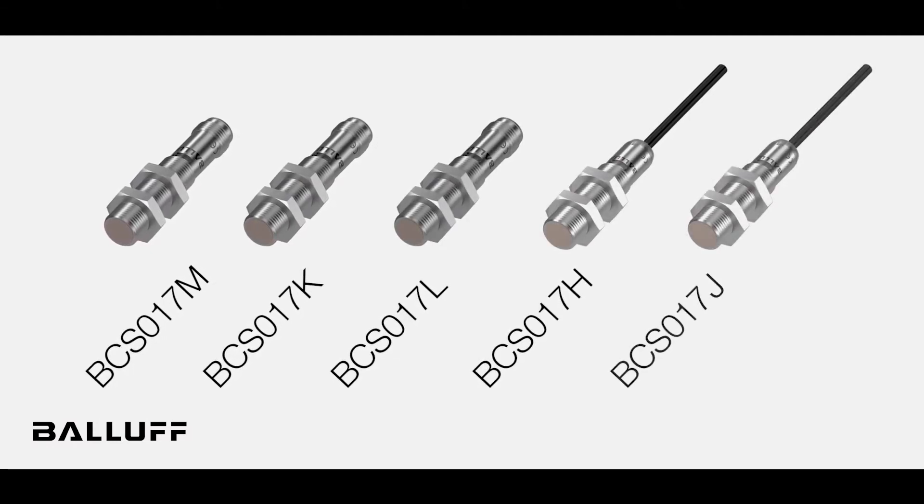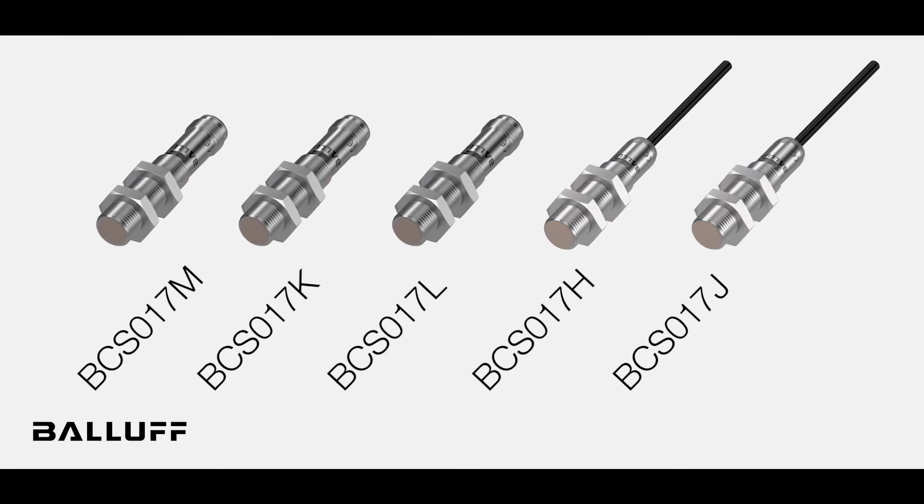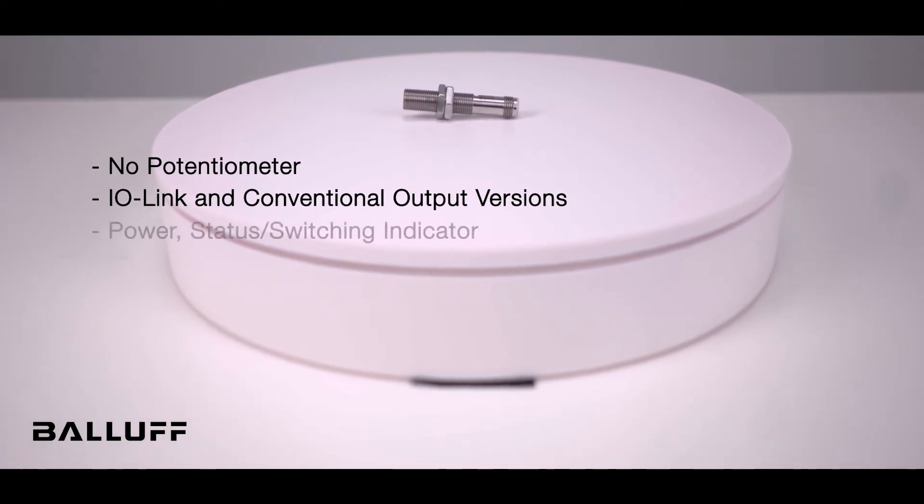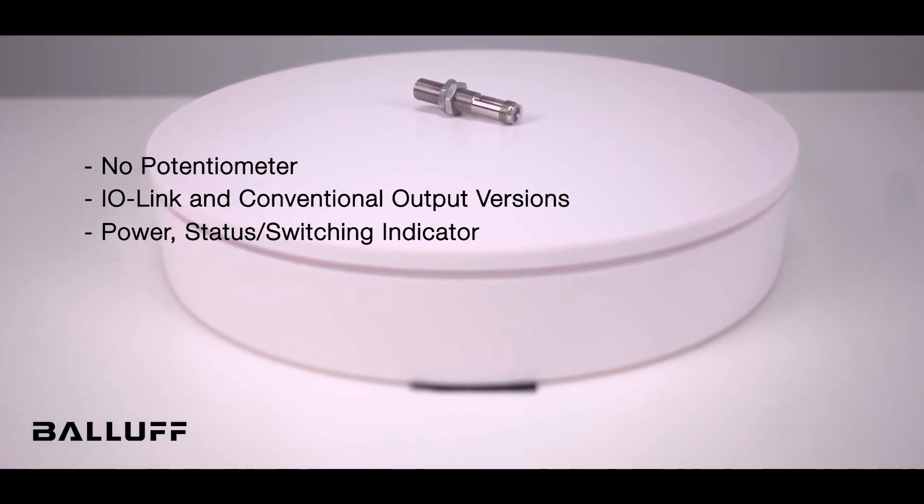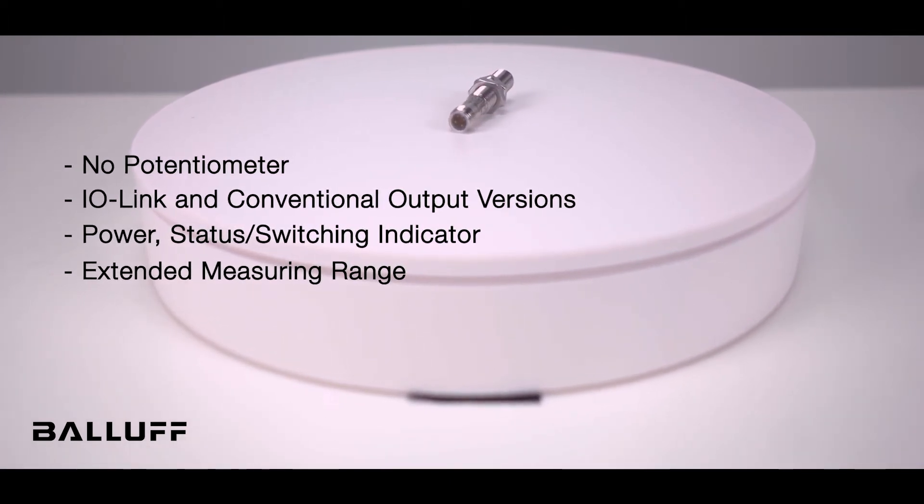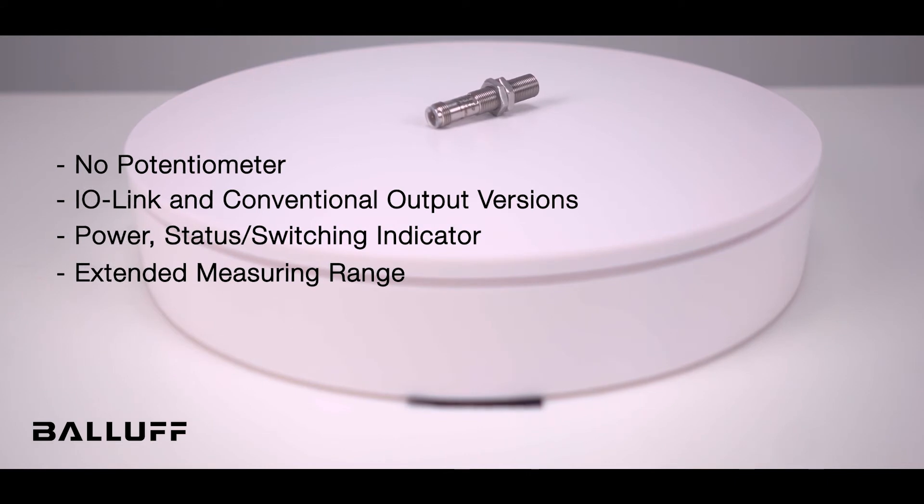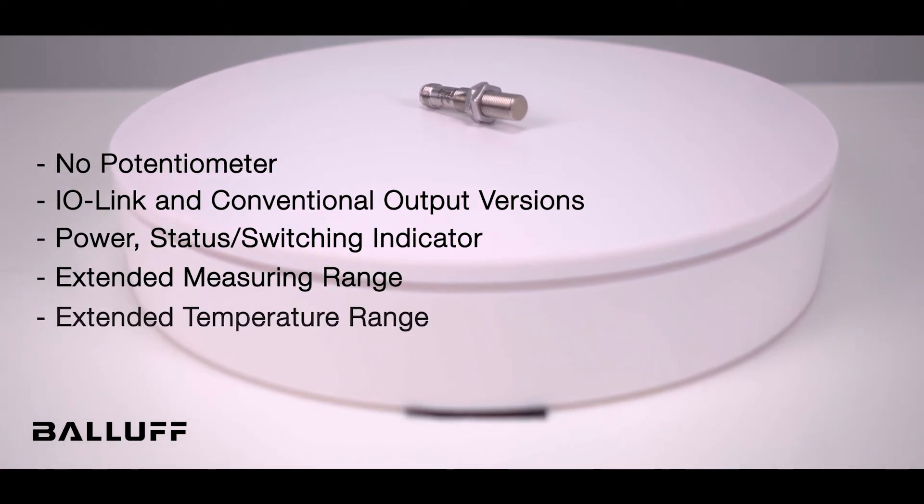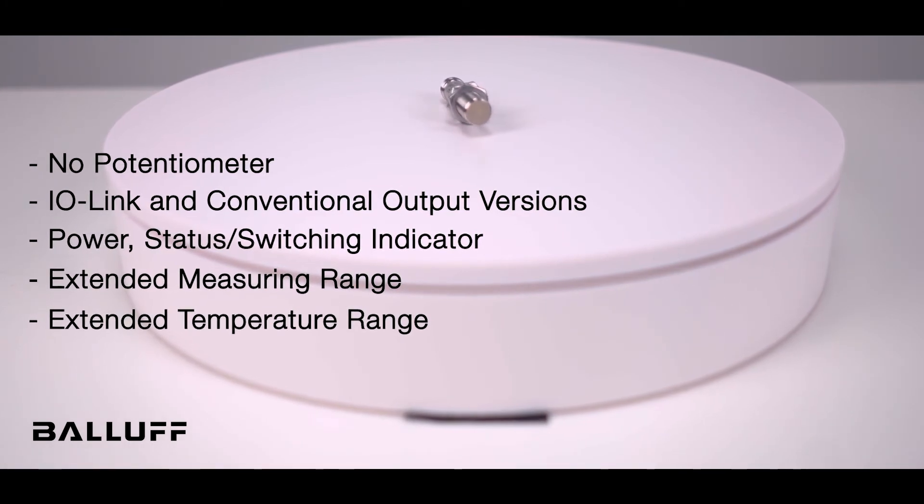Our newest versions, the BCS017M K, L, H, and J, offer optimized technical features including no potentiometer, IO-Link and conventional output versions, power, status, and switching indicators, extended measuring ranges from 0.5 to 5 mm for object detection and 0.5 to 8 mm for level detection, and extended temperature ranges of negative 10 to 80 degrees Celsius.